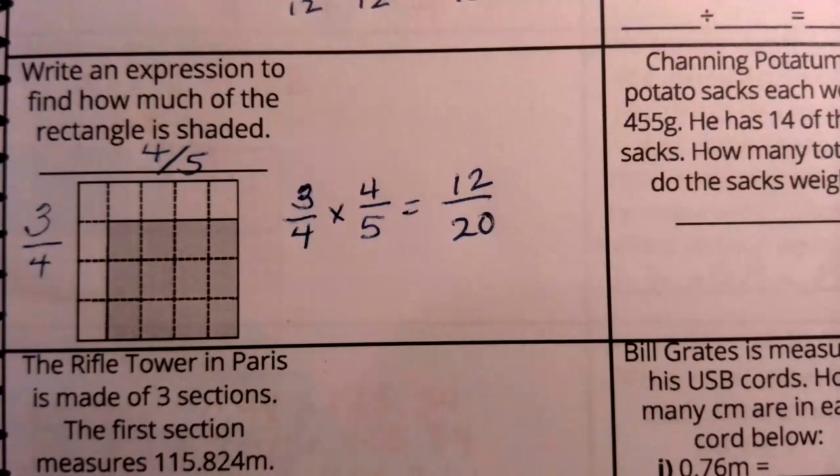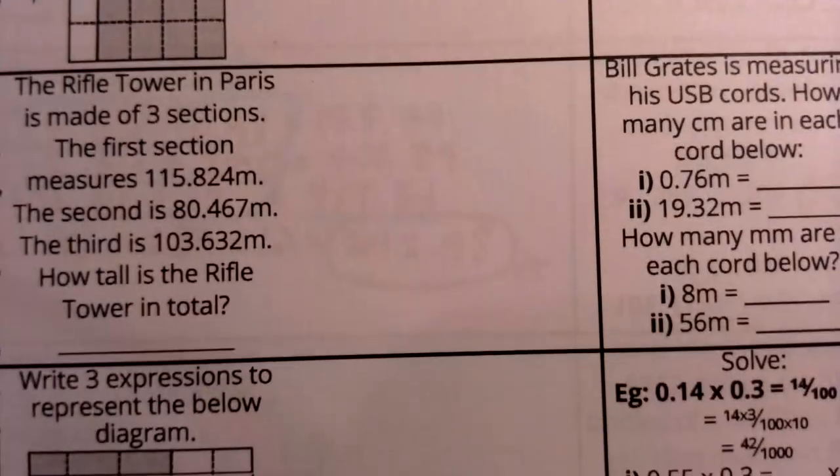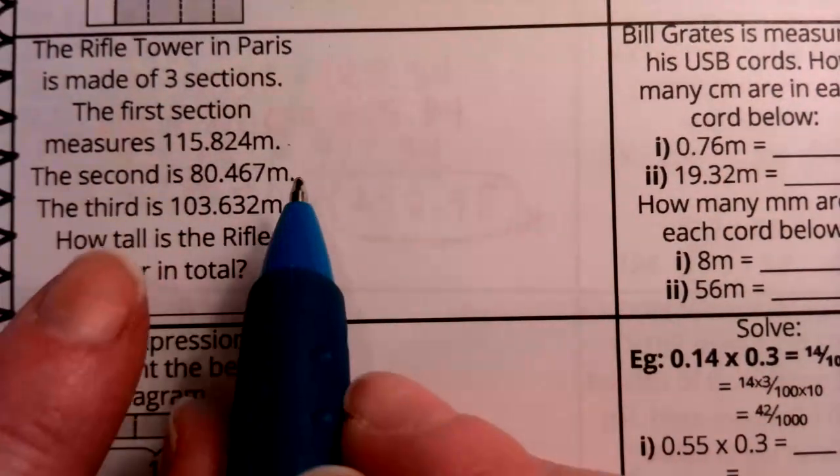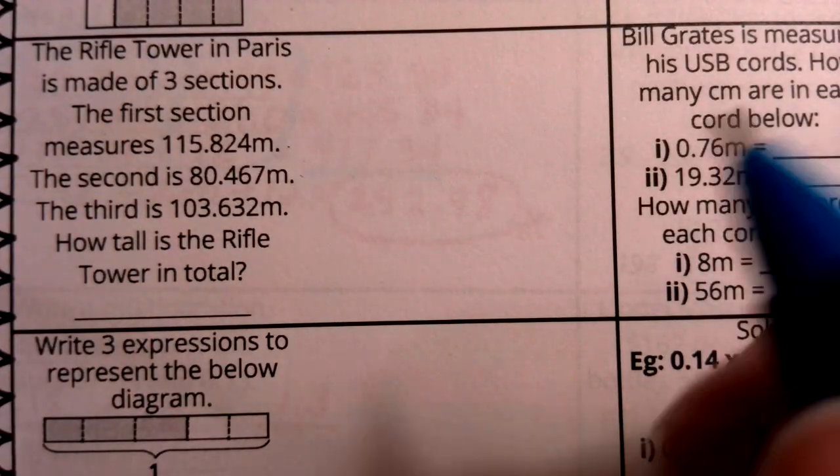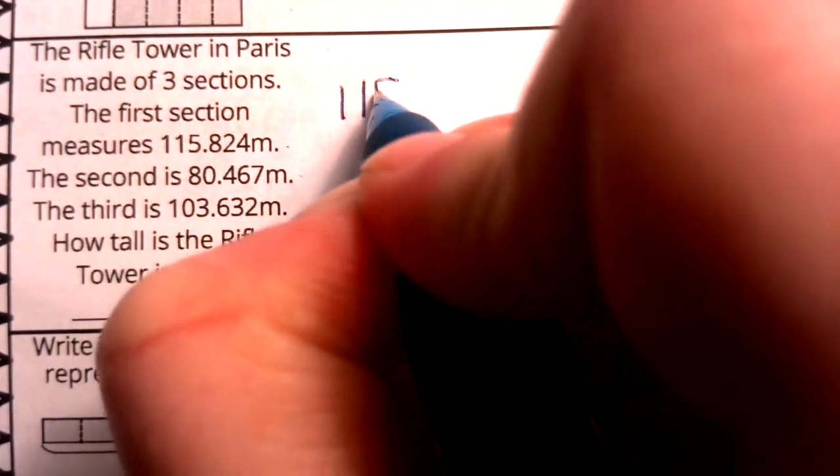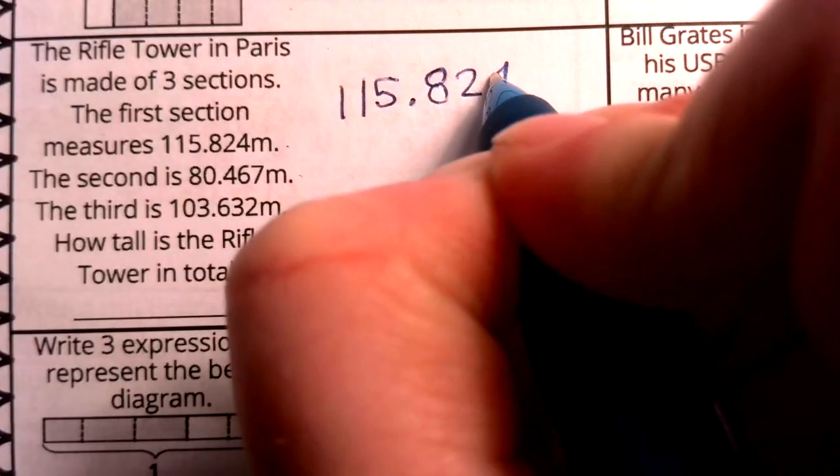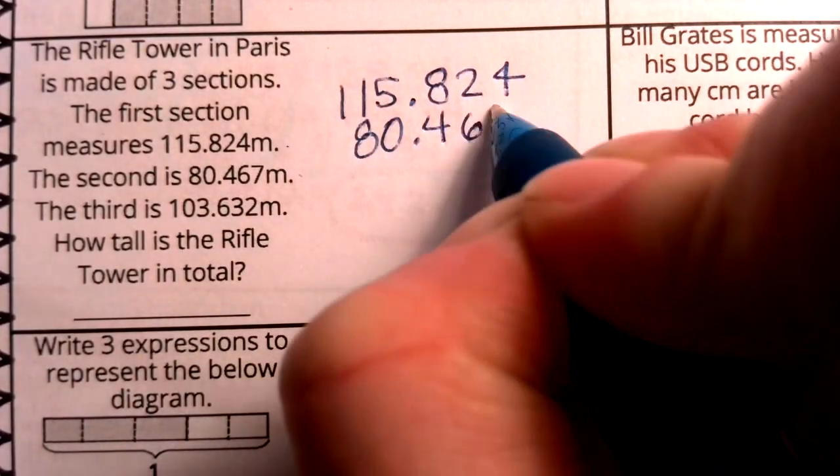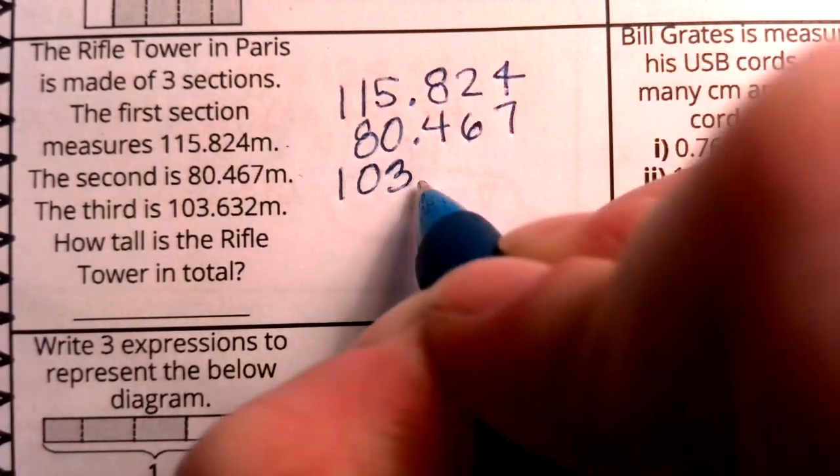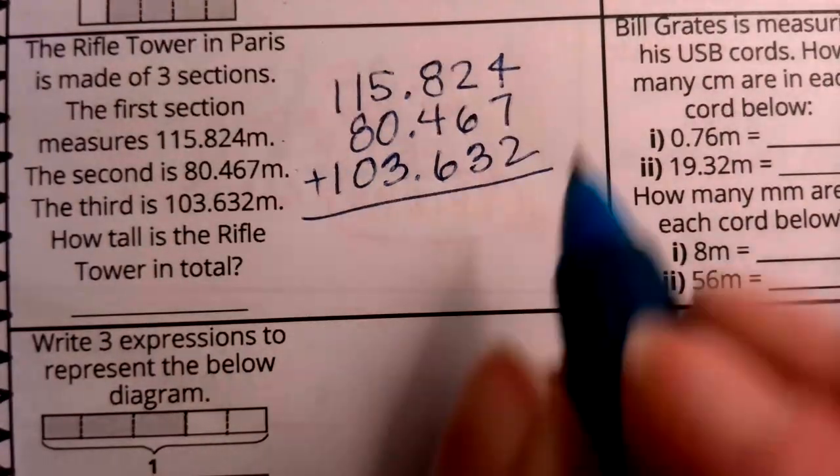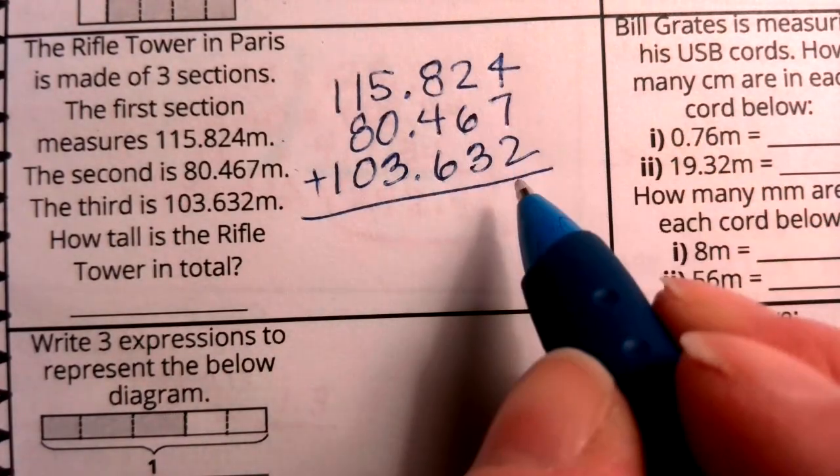Our second to last problem today is about the Eiffel tower. The area is made of three sections. Notice this is my first section, second section, third section. How tall is the Eiffel tower in total? So we are going to stack these numbers. We are going to attend to the place value and make sure that this place value perfectly aligns. When I perfectly align these place values, now I'm adding my hundredths, for example.